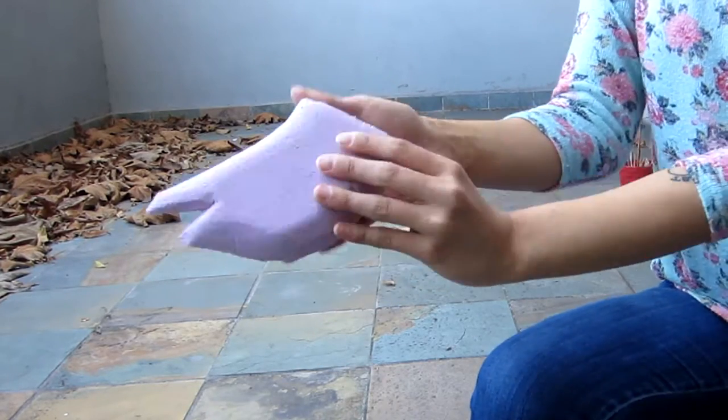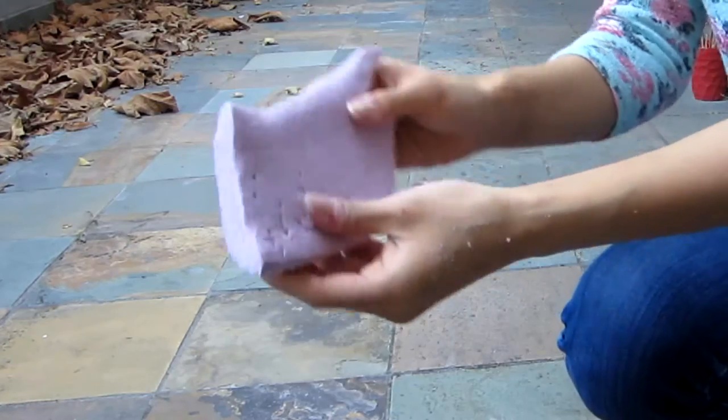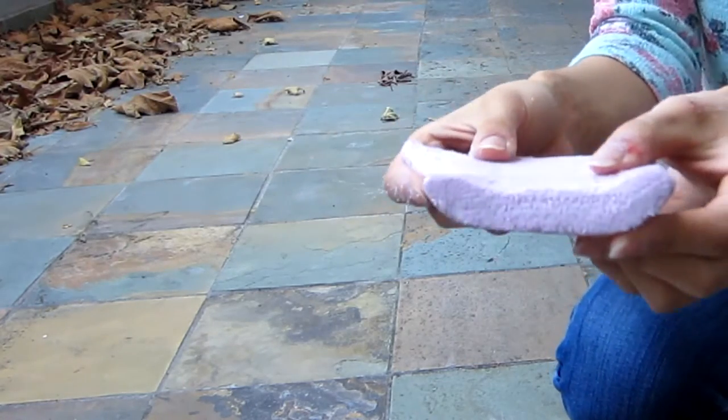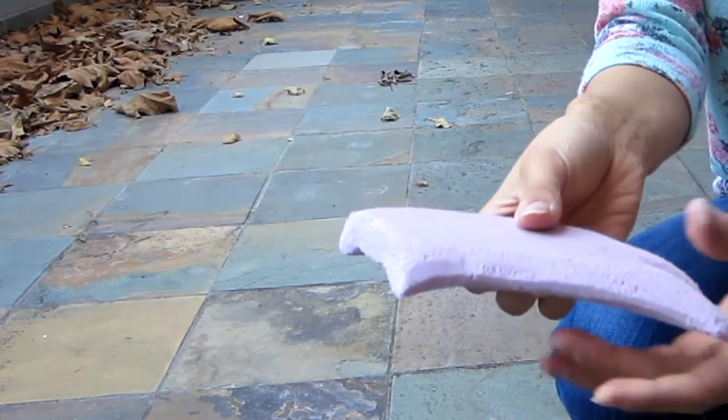Sanding these pieces will also help with the curve. It'll help smoothen the curve as well as any blemishes you have on the outside of these pieces.